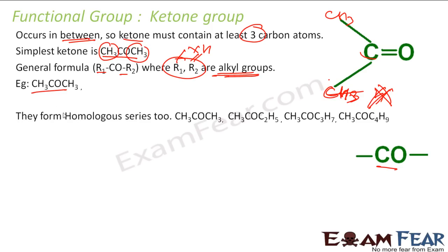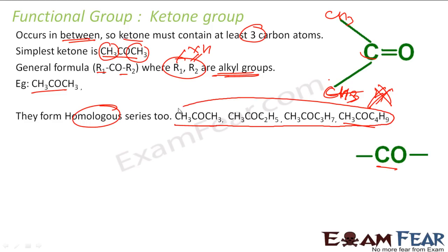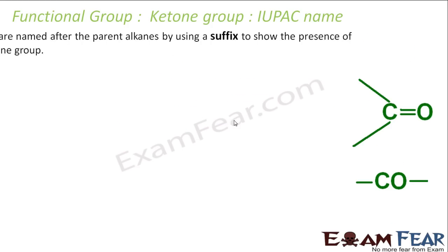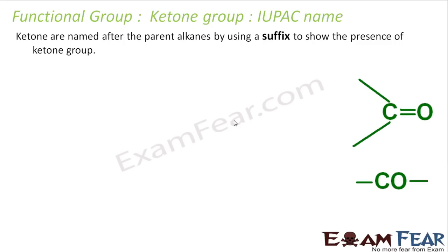Ketones also form a homologous series. For example: CH3-CO-CH3, then CH3-CO-C2H5, then CH3-CO-C3H7, and CH3-CO-C4H9. So they are all a homologous series with similar chemical properties.